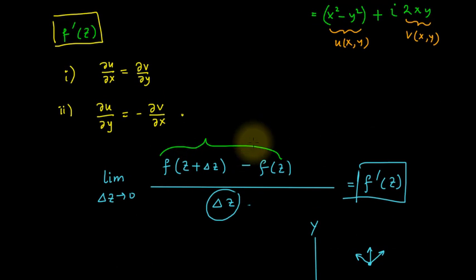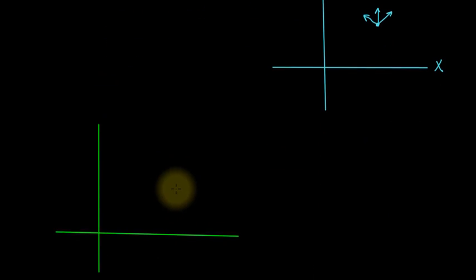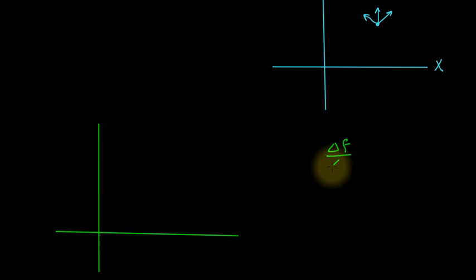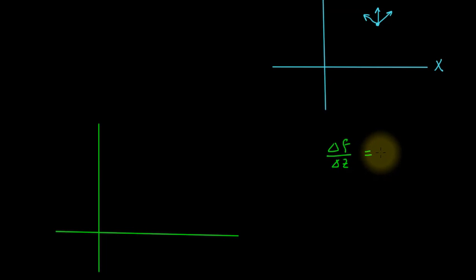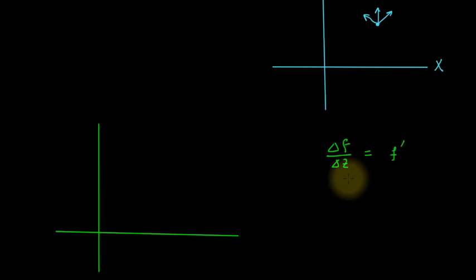We can write this as Δf, the change of the function due to the change in the independent variable z. If the limit of Δf/Δz as Δz → 0 exists, the function is differentiable. Now assume the function is differentiable; we need to prove the Cauchy-Riemann equations, so Δf/Δz = f'(z).